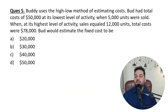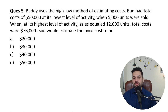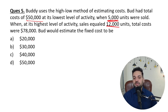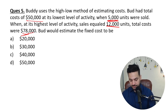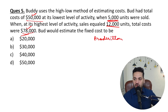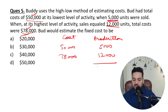Question five also uses the High-Low method. Total cost of 50,000 at the lowest capacity of 5,000 units and highest level of activity 12,000 units with total cost of 78,000. For producing an additional 7,000 units, they are spending 28,000 dollars. Per unit variable cost is 28,000 divided by 7,000.